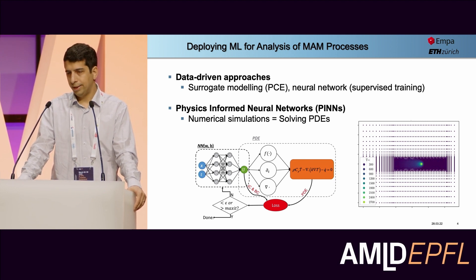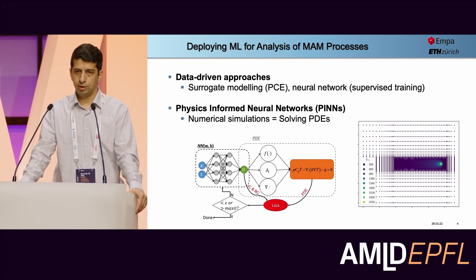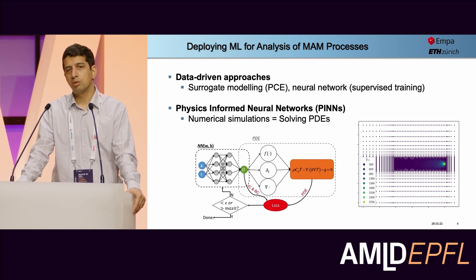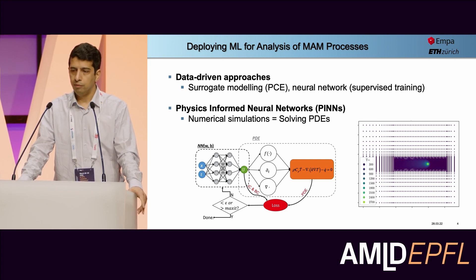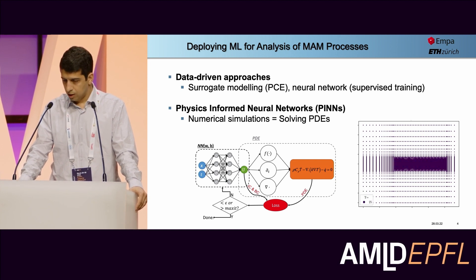Later we started to use physics-informed neural networks, and that was quite useful for us. When we do any type of simulation, we are doing nothing more than solving a PDE for given initial and boundary conditions. The idea of PINNs is: let's assume we already have the solution for our problem. To assure the solution is correct, we put it into the PDE and check if it satisfies our initial and boundary conditions. We assume the solution is given by a neural network, so it's easy to take the derivatives needed in the PDE. We calculate how much we are violating the PDE and the initial and boundary conditions, and if we are not happy, we keep optimizing our weights and biases.